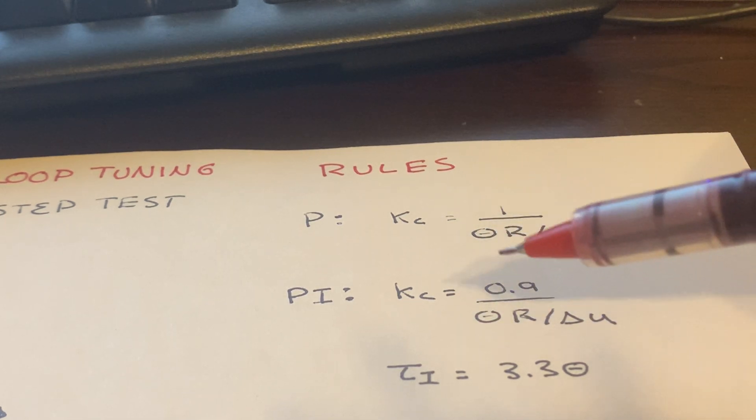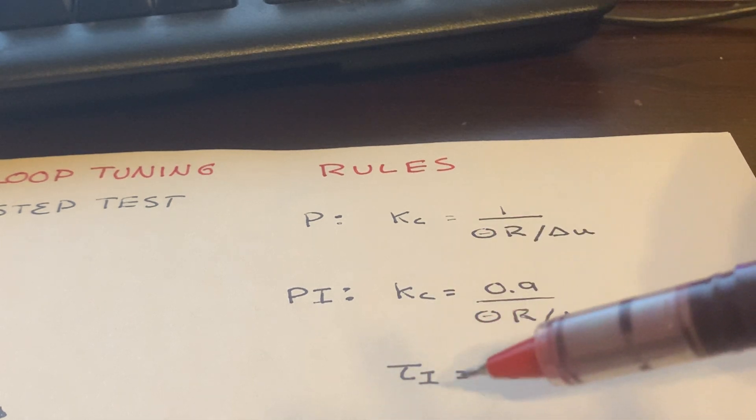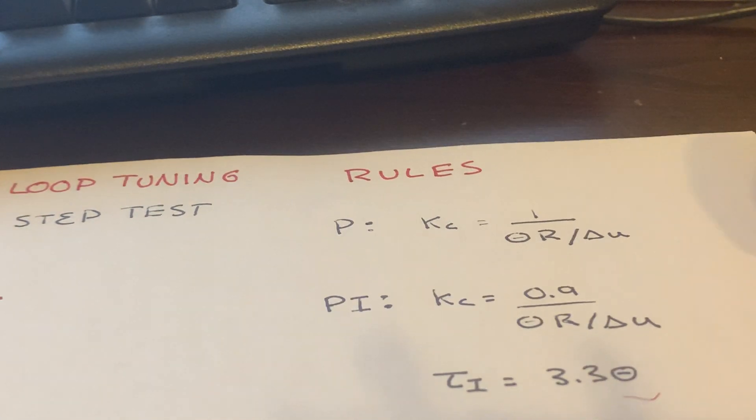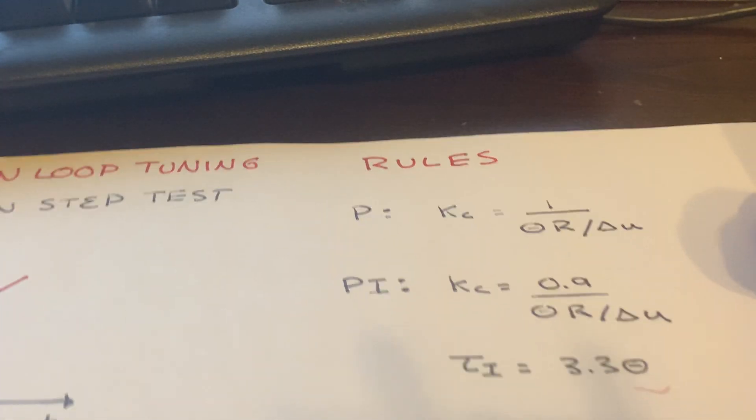For PI, it's Kc, which is the same rule for the proportional gain, except we're just tuning it down a little bit. So rather than 1, we're going to put 0.9. And then our integral time is just going to be equal to 3.3 times our estimate of our time delay. That's basically the tuning rule.